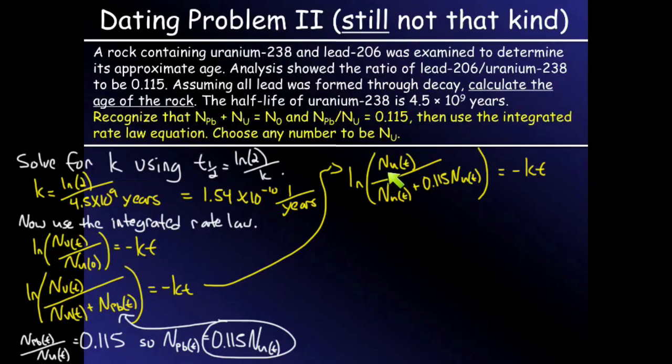So now I have number of uranium nuclides at time t divided by number of uranium nuclides at time t plus 0.115 times number of uranium nuclides at time t. All of these, based on the algebra, can cancel out.